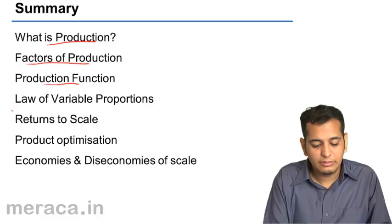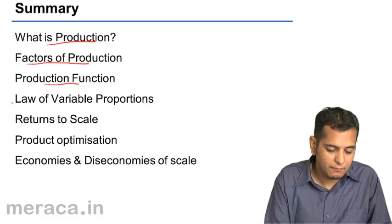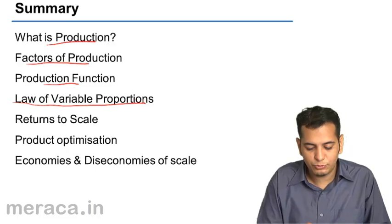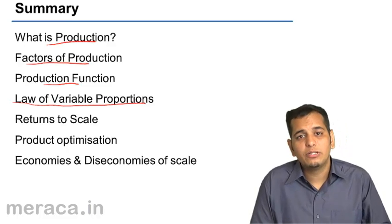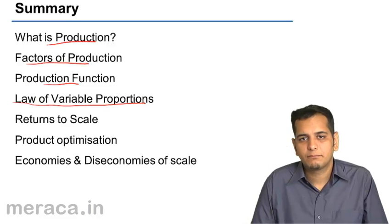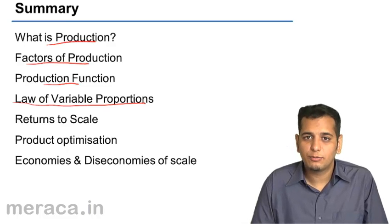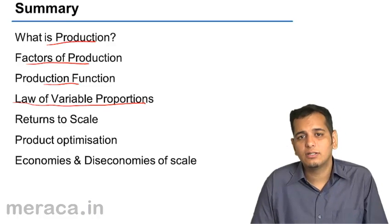Then we have done the law of variable proportion. The law of variable proportion operates in the short run where only one factor is variable. It says that a firm generally is under three stages.